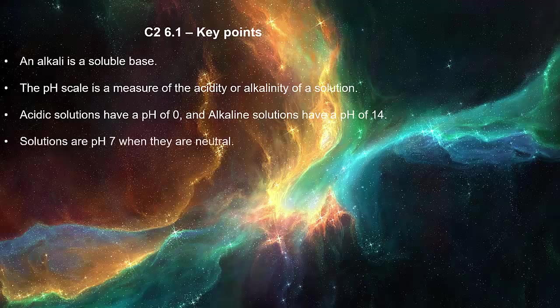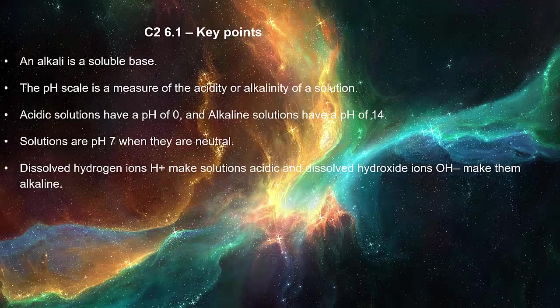Solutions are pH 7 when they are neutral. Dissolved hydrogen ions make solutions acidic and dissolved hydroxide ions make them alkaline.